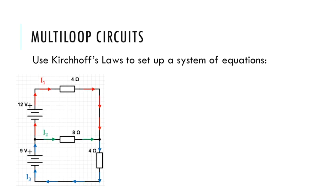Our next step was to label the polarities and we remember that current flows from positive to negative, or in other words current flows into the positive end of a resistor. So those are what our pluses and minuses should look like for this problem.